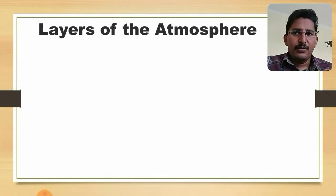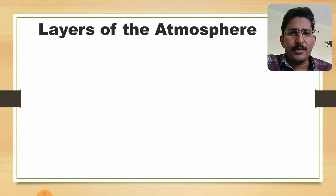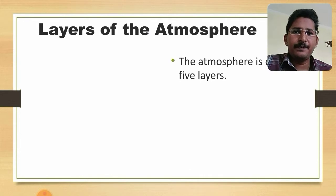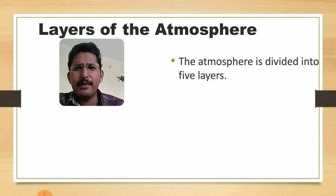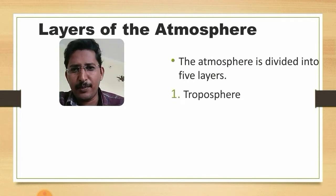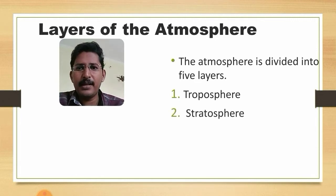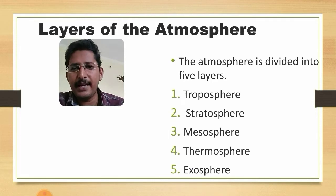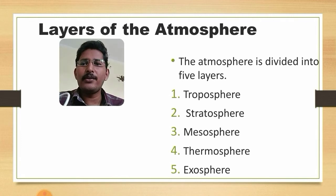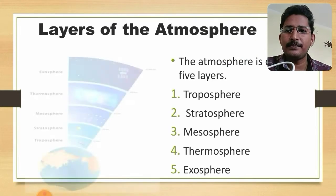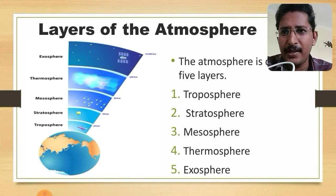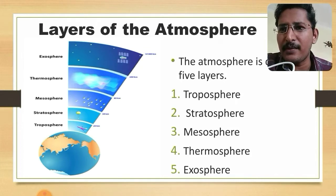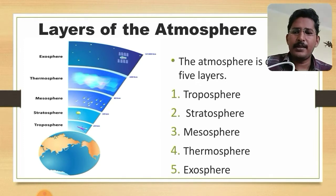The atmosphere is divided into five main layers. The first is the troposphere, the second is the stratosphere, the third is the mesosphere, the fourth is the thermosphere, and the fifth is the exosphere. A diagram showing all these layers is provided for your reference.